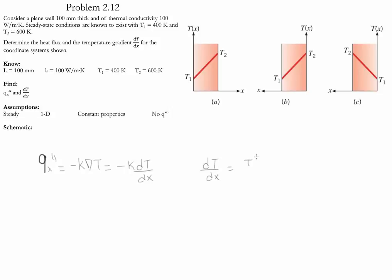Notice that we can define dT/dx as the change of the final temperature minus the initial temperature divided by the distance between them, delta x. Let's start with Part A.